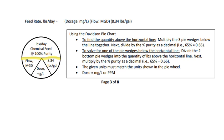Using the Davidson pie chart, find the quantity above the horizontal line and multiply the three pie wedges below together. Then divide by the percent purity as a decimal if it is not 100% purity. So 65% would be 0.65 — you are dividing when solving for above the horizontal line.